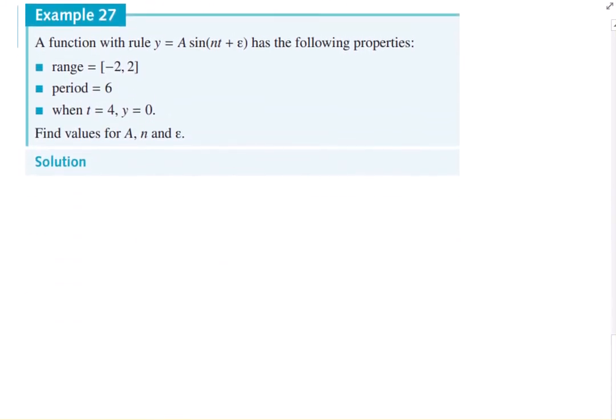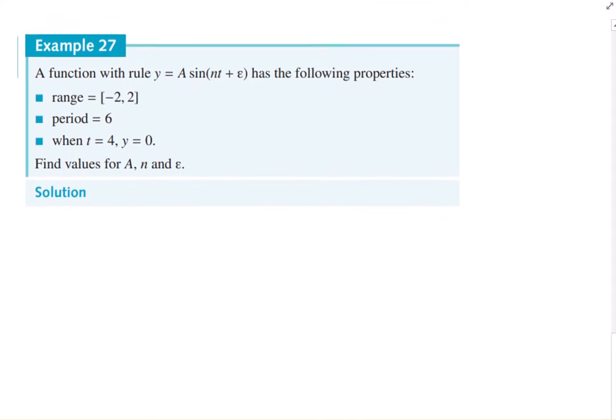And last example. A function with the rule a sine nt plus epsilon. So that little symbol there, that little E is epsilon. Has the following properties. In doing these, you need to be really a little bit careful here. I hate them written that way. And we'll always take out the n as a common factor. So if we take out the n as a common factor, then it becomes t plus epsilon on n. The reason for doing that is then the shift of the graph is, well, it'll be negative epsilon on n. If you don't take out the n, it's easy to get the shift wrong.